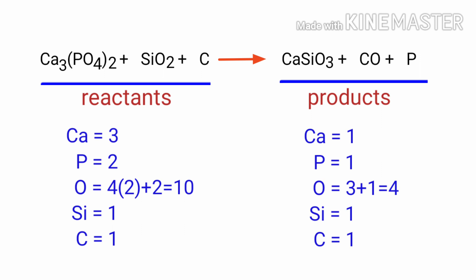On the products side, there are 1 calcium atom, 1 phosphorus atom, 4 oxygen atoms, 1 silicon atom, and 1 carbon atom present.